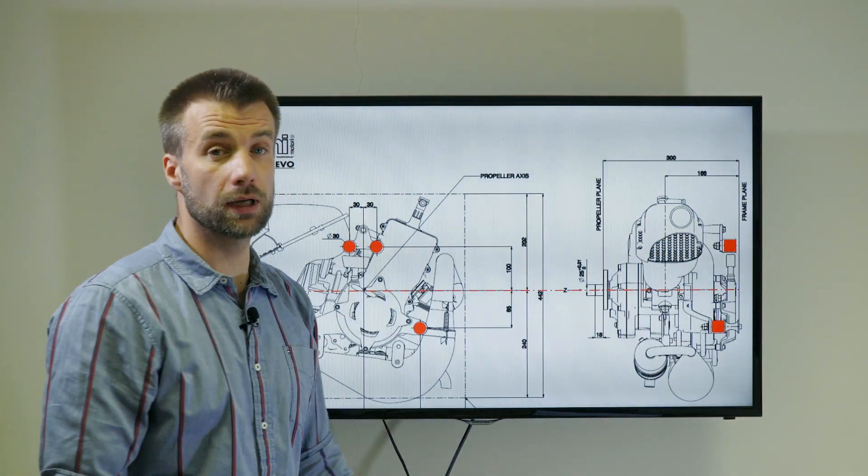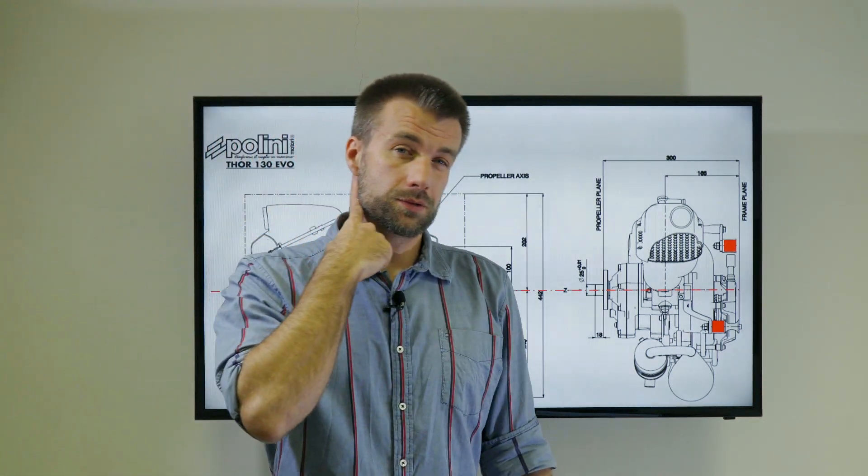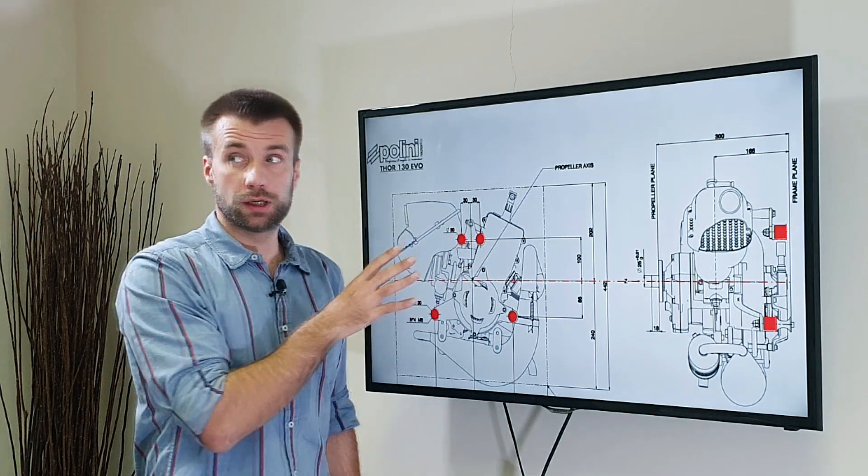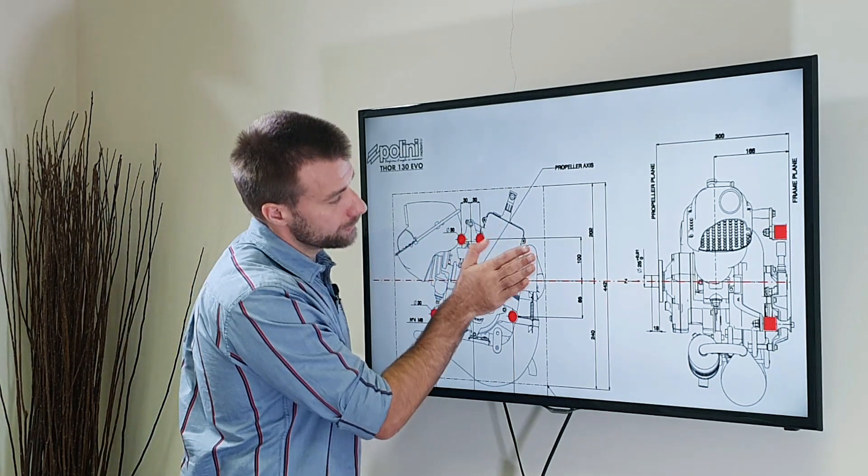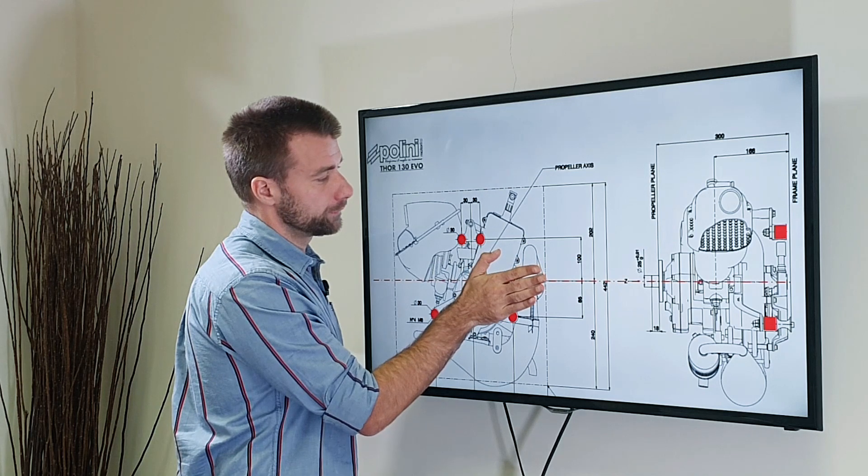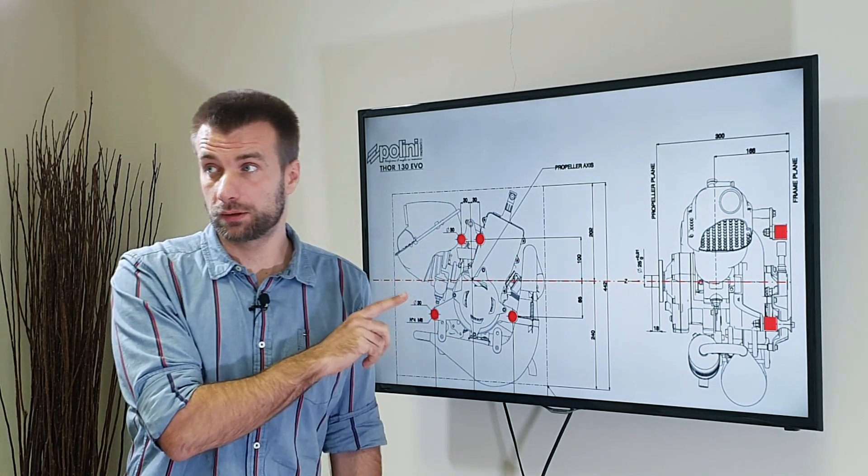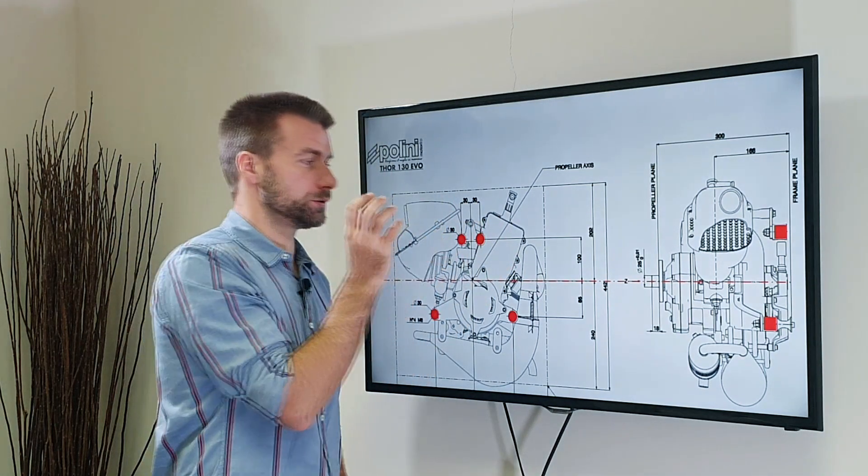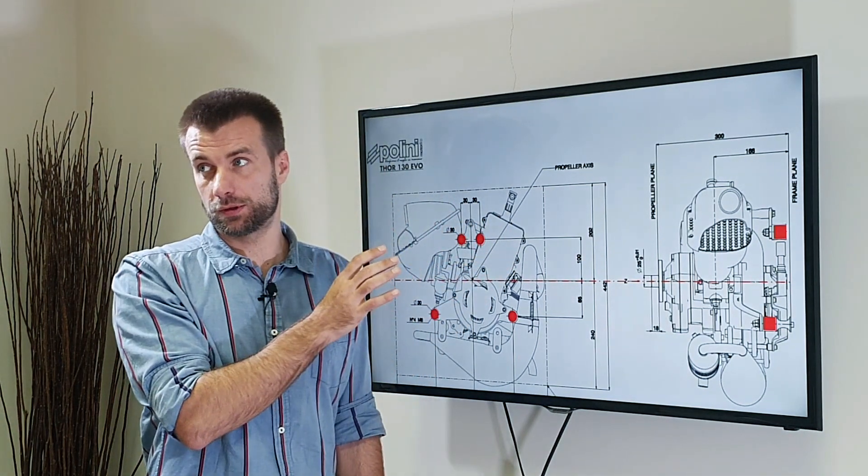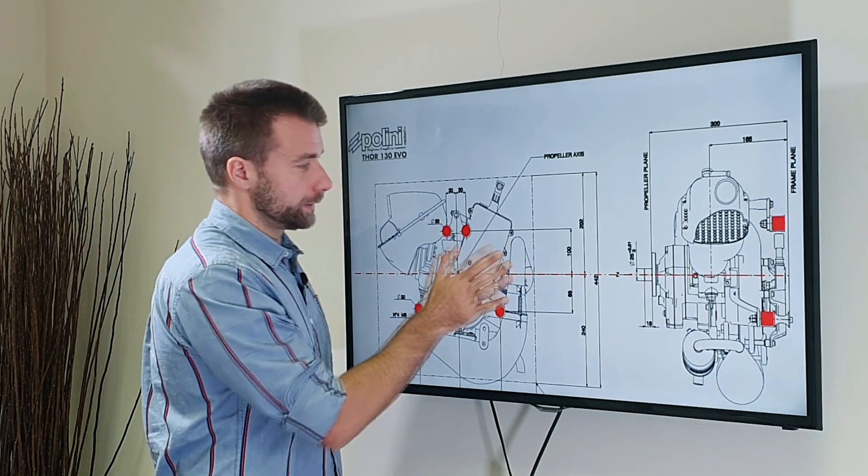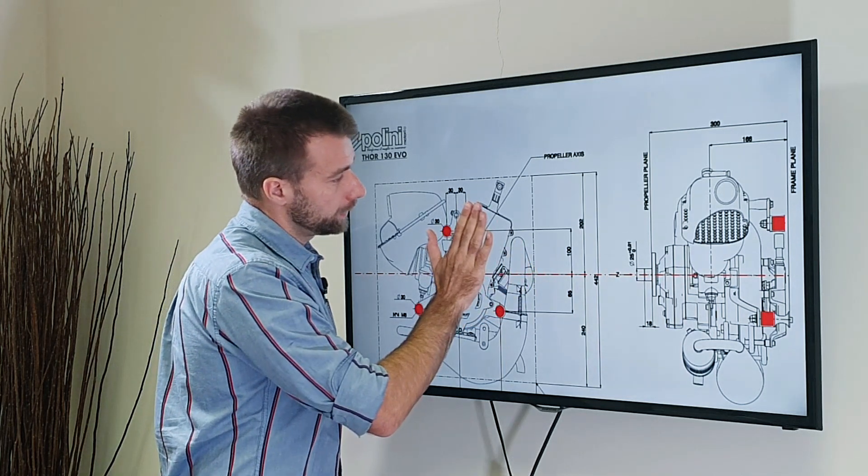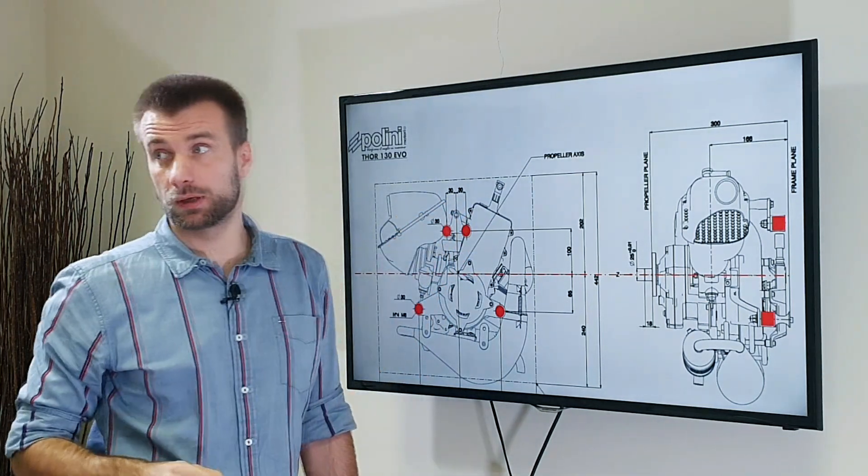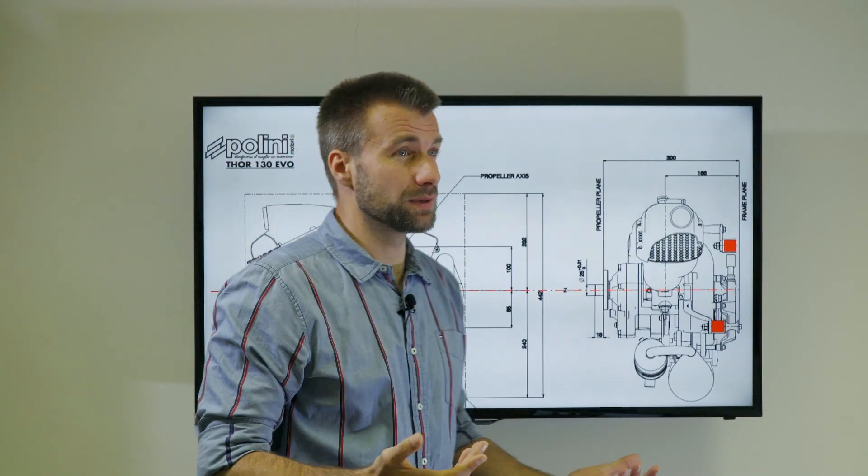Yeah, respect to that, it's a good solution. The reason why others don't do it is because others rely on propeller cooling. They need to rotate the motor a little bit further from the propeller axis. So they just don't have anything in here to attach the rubber mounts to. While Polini uses forced cooling, they can keep the engine closer here, and suddenly they have a rigid structure to put the engine mounts to.